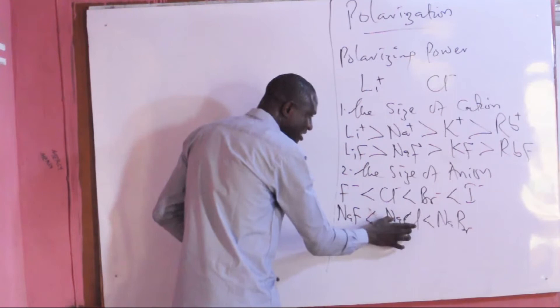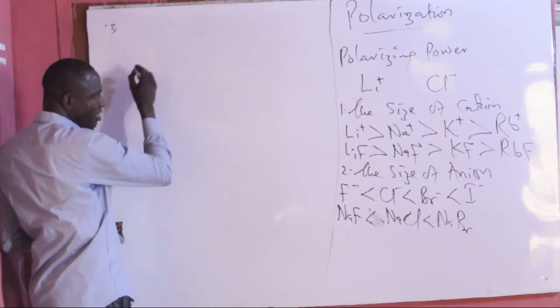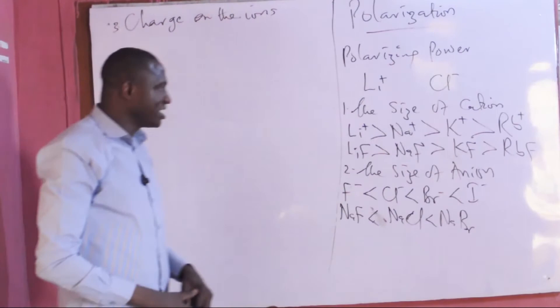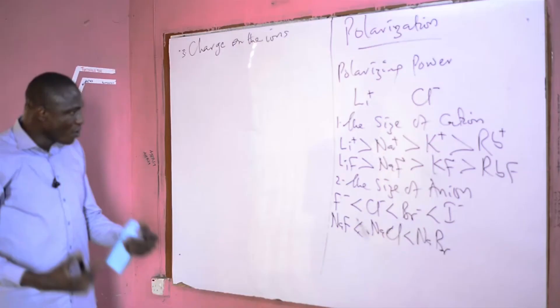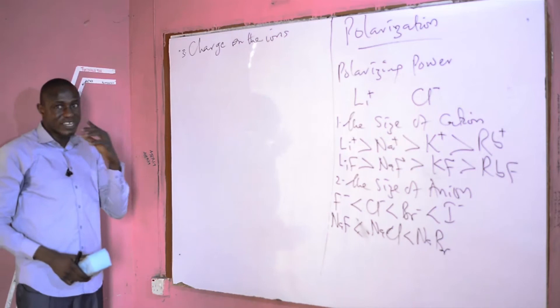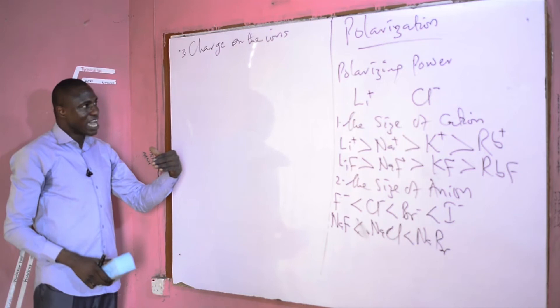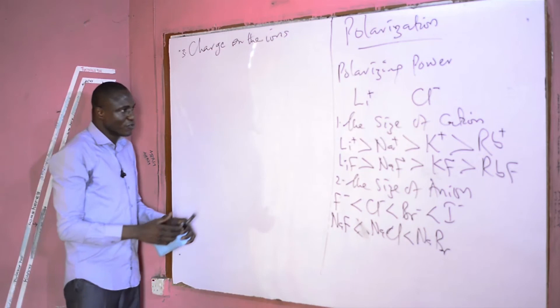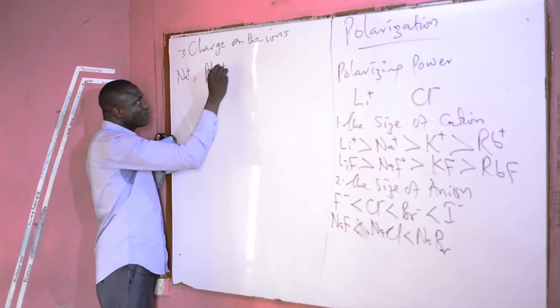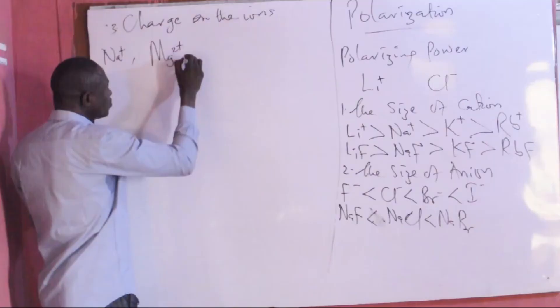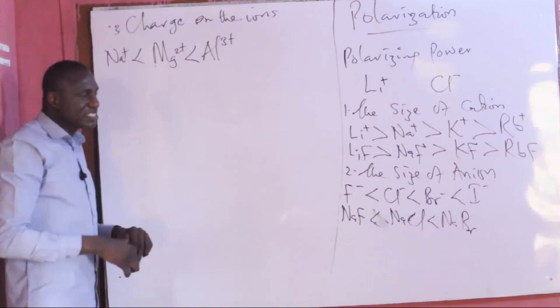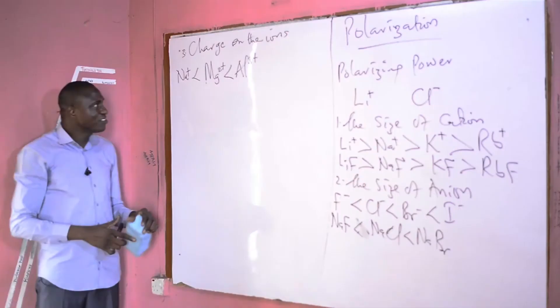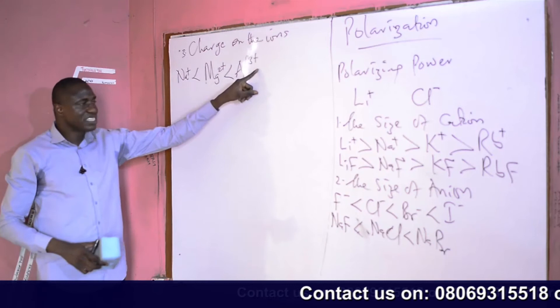The third factor is the charge on the ions. The higher the charge on the ion, the more is its polarizing power, whether cations or anions. Cations of higher charges tend to have higher polarizing power than cations of lower charges. Looking at period 3, we have sodium ion with a charge of +1, then magnesium ion with a charge of +2, and aluminium ion with a charge of +3. As we go in this direction, there is an increase in polarizing power, because these ions have the same electronic configuration but increasing charge from left to right. So aluminium ion has higher polarizing power than magnesium ion, which has higher polarizing power than sodium ion.